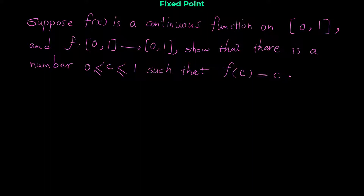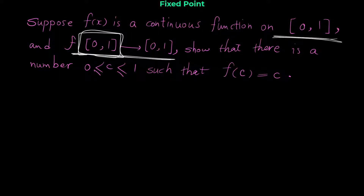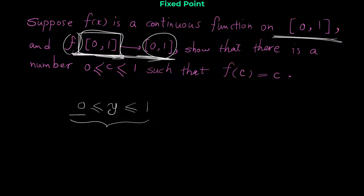Suppose f(x) is a continuous function on the interval [0,1], and the function f maps [0,1] to [0,1]. The domain is [0,1], and this notation shows that the y-value of the function f is always between 0 and 1. It can be 0 or 1, but whatever value the function f takes, it must always be between 0 and 1.